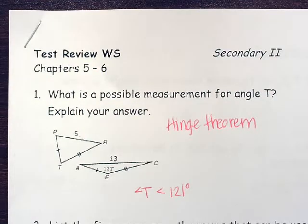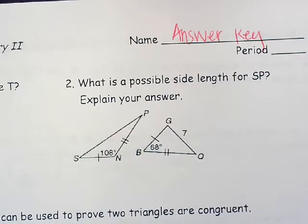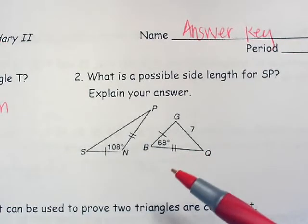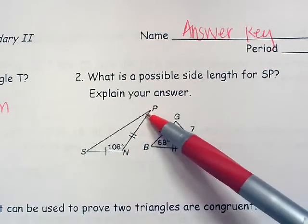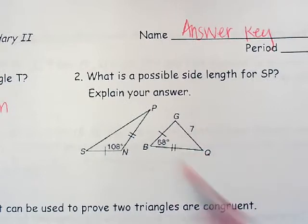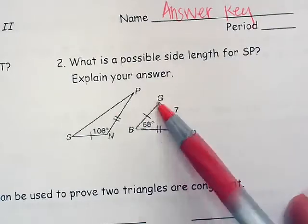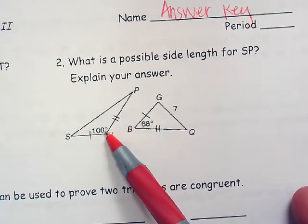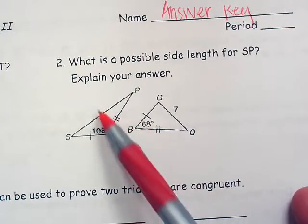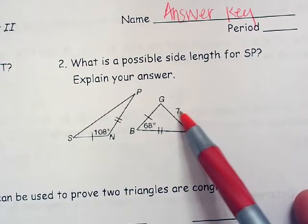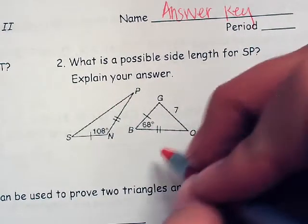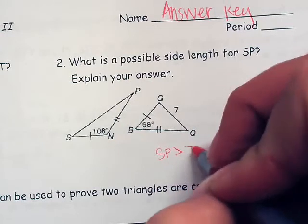It also has to be bigger than 0 — we can't have an angle that's 0. Problem 2: what is the possible side length for SP? Same thing — the Hinge Theorem. We have this side congruent to this side, and this side congruent to this side. The angle between those two is different: this one's 108 and this one's 68. So this side must be bigger than this side. Since this one is 7, SP has to be greater than 7.